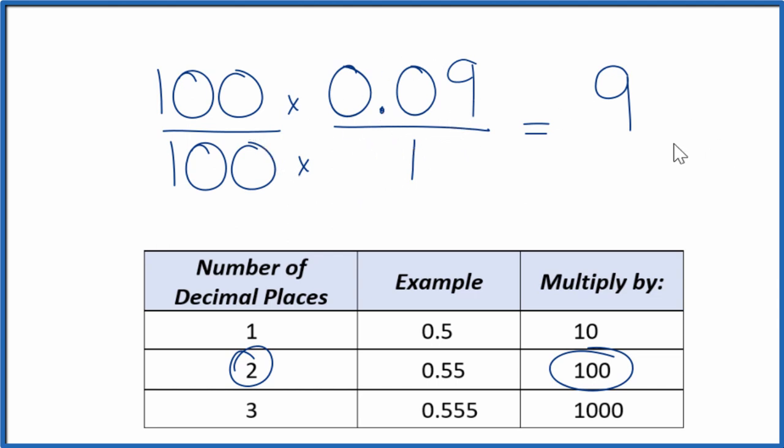So 100 times 1 is 100, and now we have 0.09 as a fraction. We can't simplify this fraction any further. If you divided 9 by 100 on your calculator, you'd get 0.09.